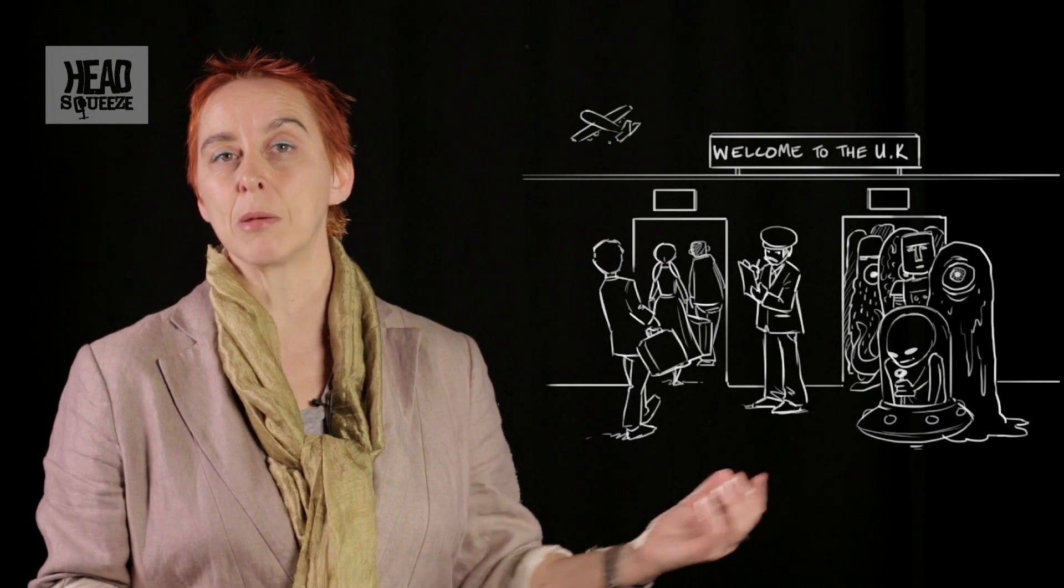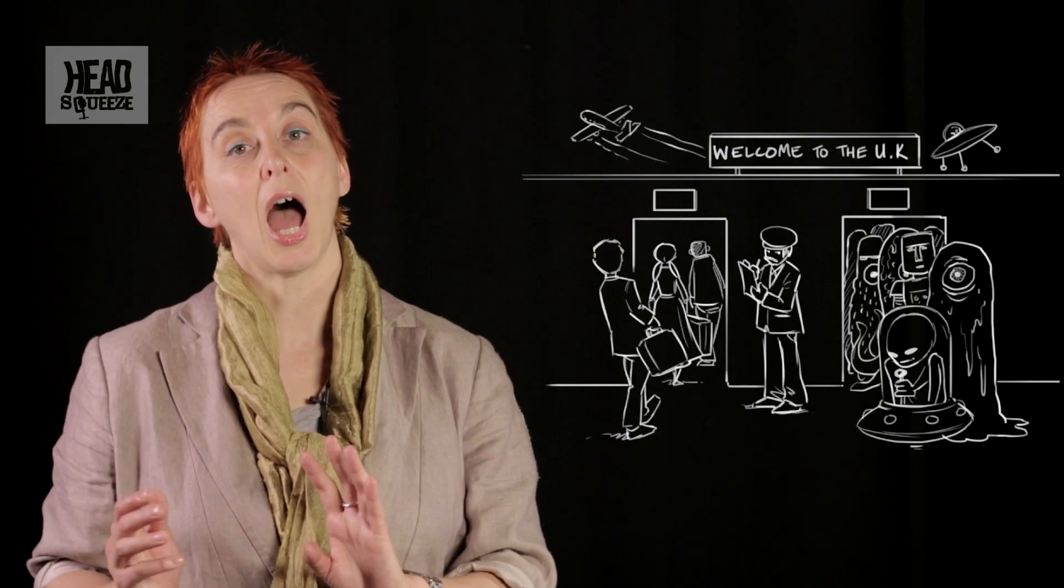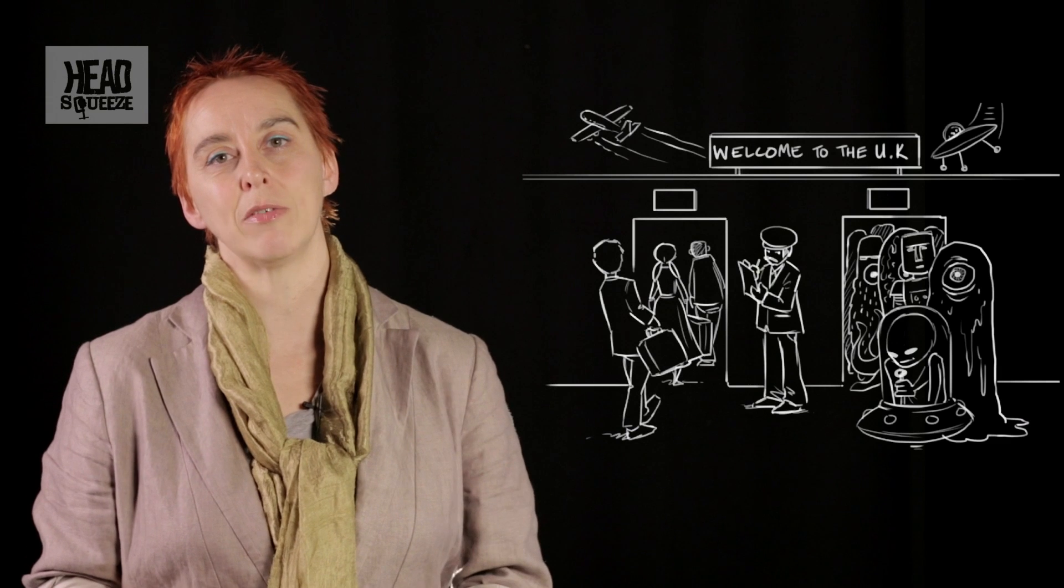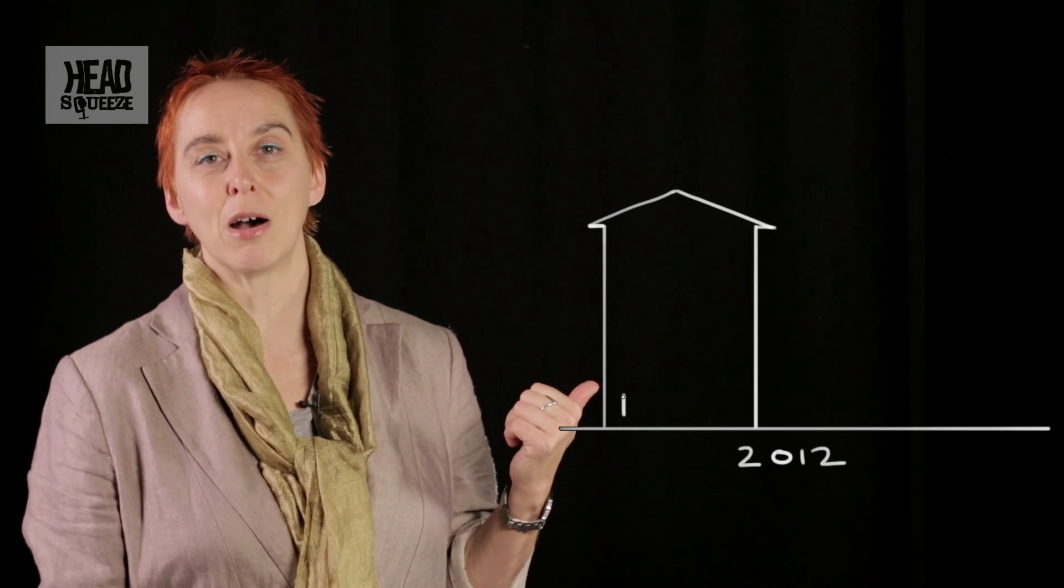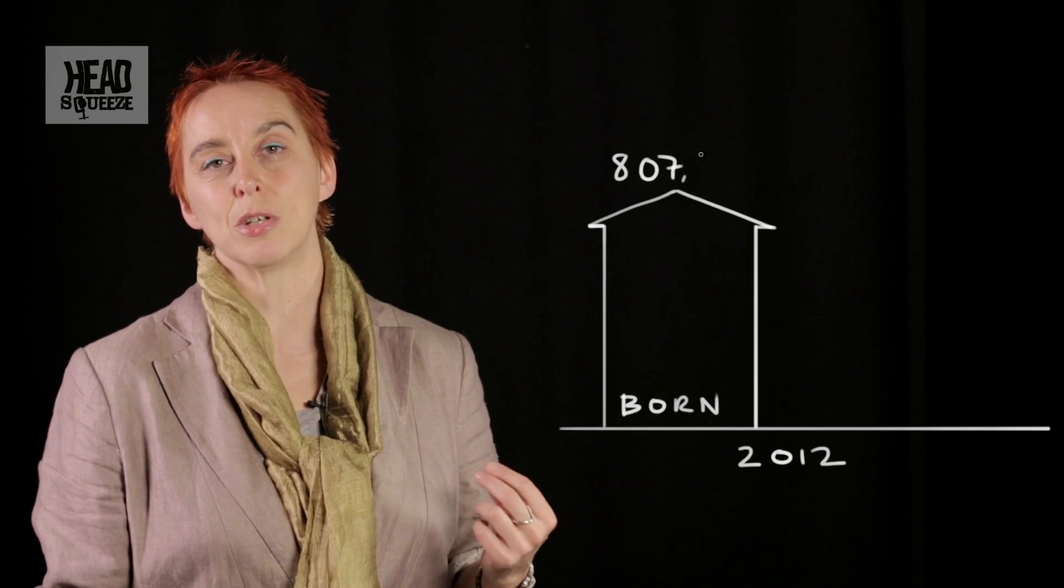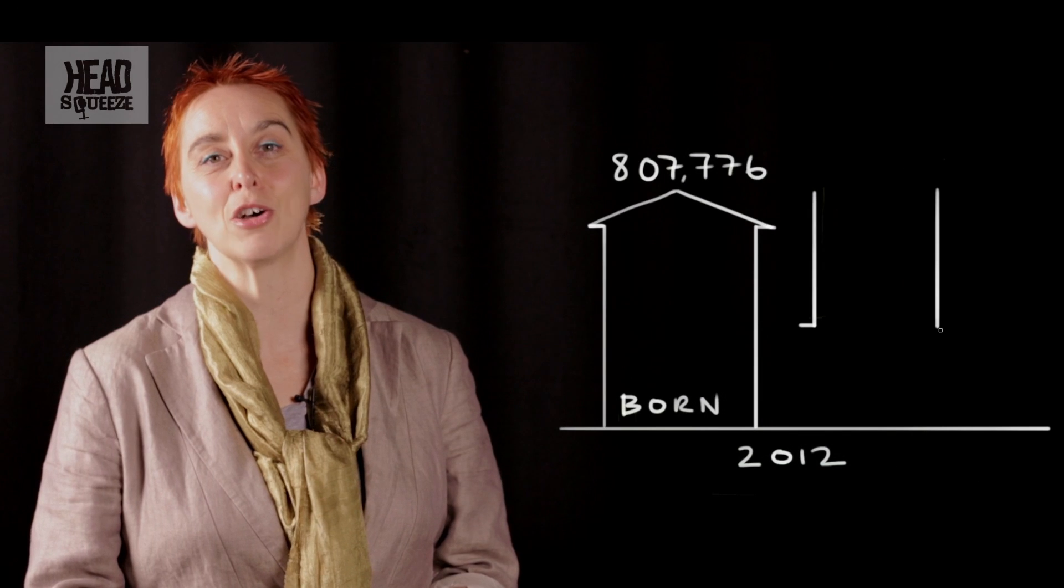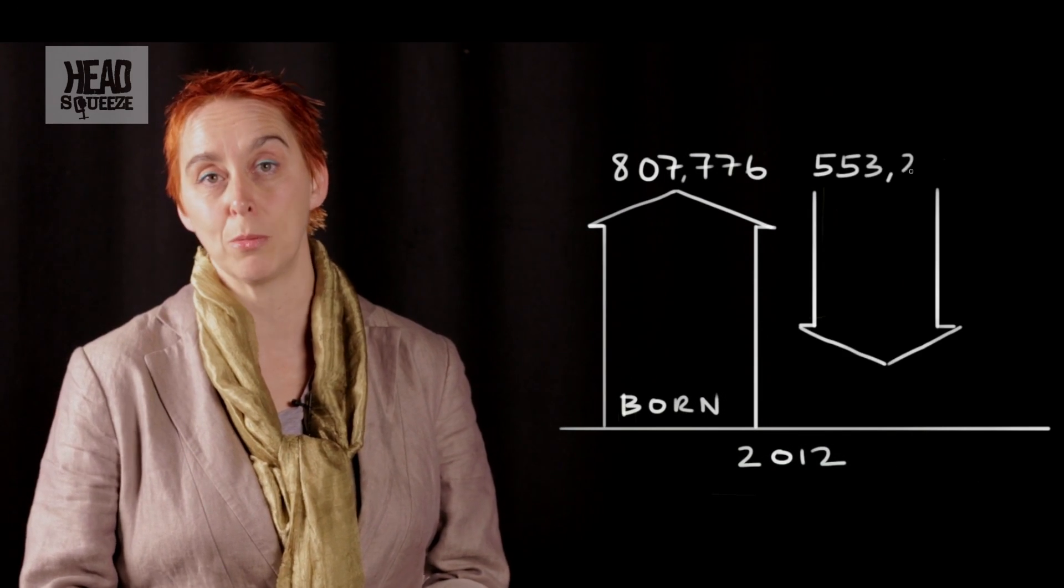With population, we have to look at the number of people coming into the world and the number of people leaving the world forever. In the last year in the UK, the number of people born was 807,776. But the number of people who died was 553,232. Leaving us with a difference of 254,544 people.